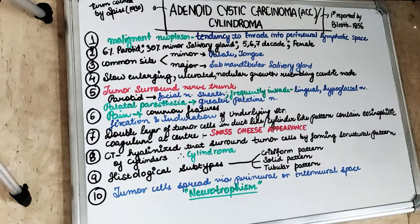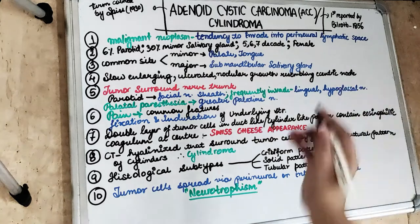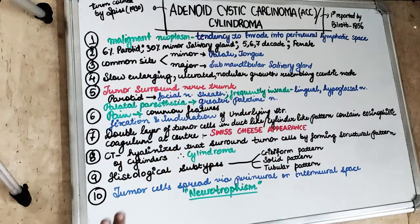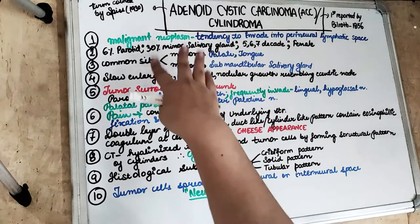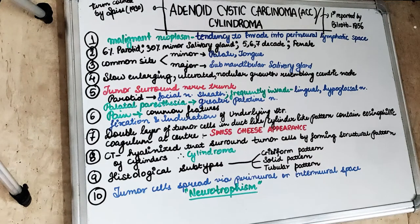ACC involves all glands — majorly the minor salivary glands, and also the parotid gland with only 6% occurrence. It presents in the 5th, 6th, and 7th decade of life and females are most commonly affected. The common site for the minor salivary gland is the palate and the tongue. For the major salivary gland, the most common site is the submandibular salivary gland — not the parotid.